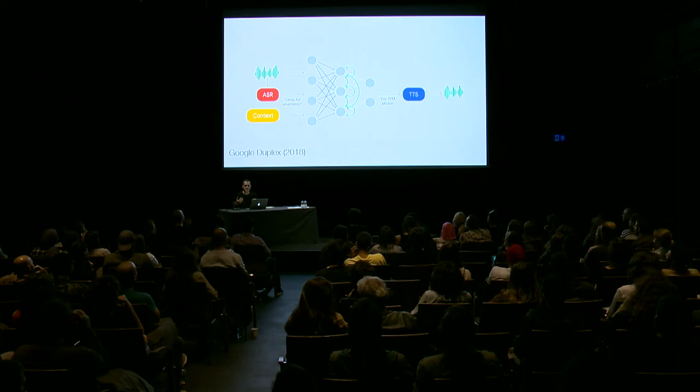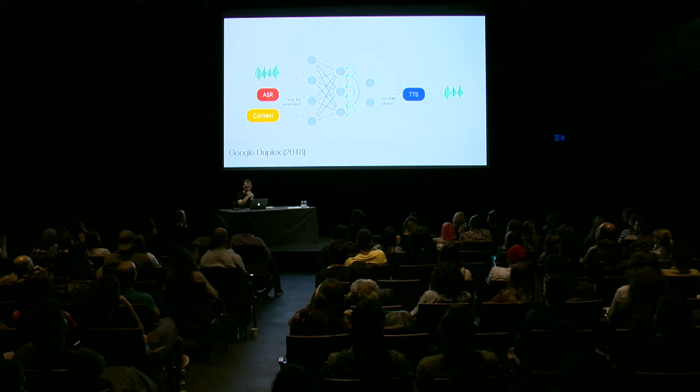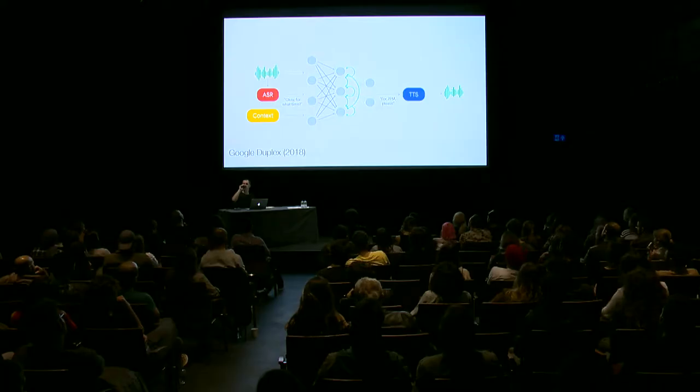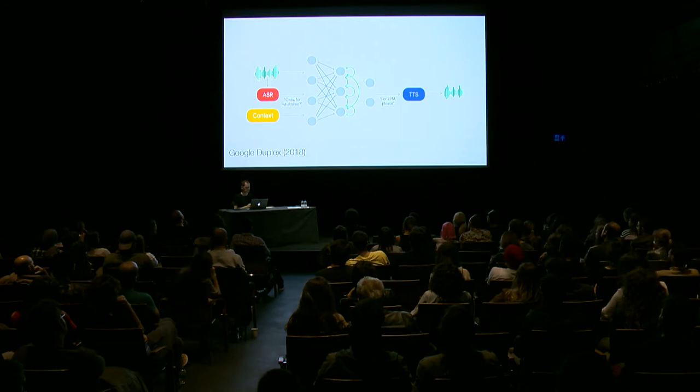It doesn't have to be photos — deep learning can work with almost any kind of media. I'm going to play a recording of something called Duplex from Google, currently in development. It's designed to call shops and restaurants to ask for hours and schedule appointments on your behalf. It's designed to sound like a human. In the recording, the AI calls a business and asks about their hours — the business responds '10 a.m. to 6:30 p.m.' and the AI wraps up the call naturally.